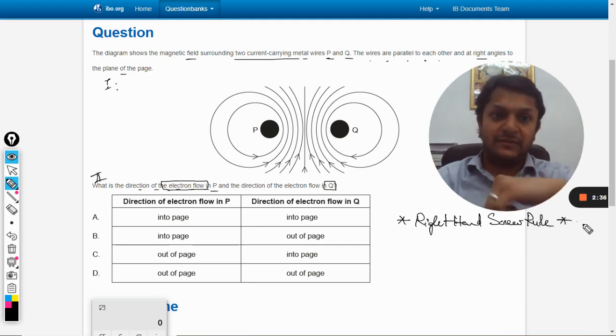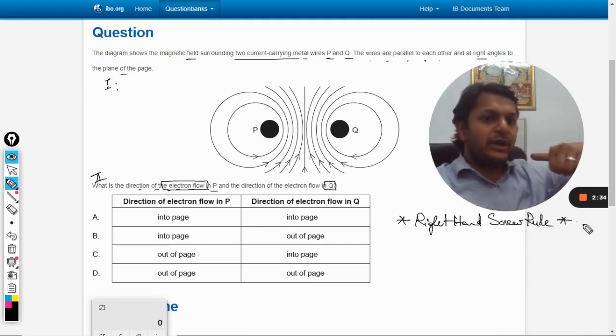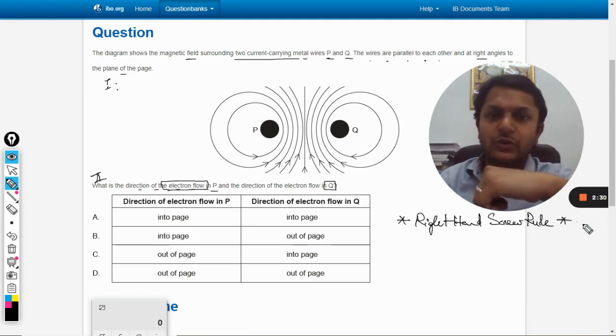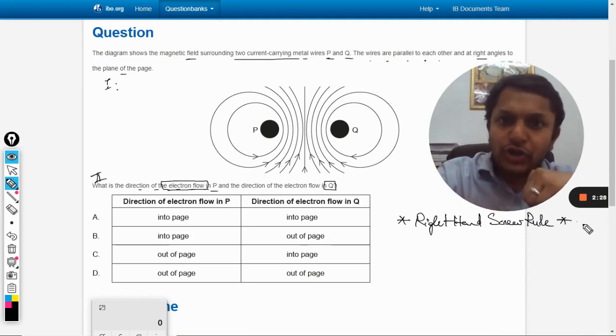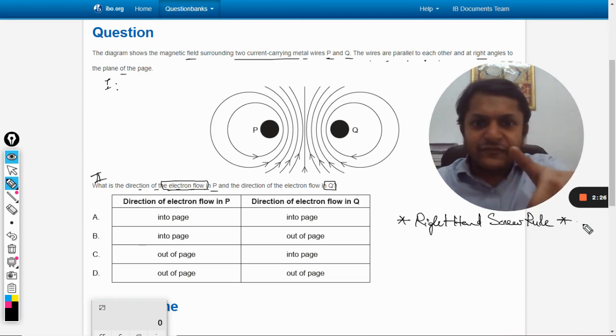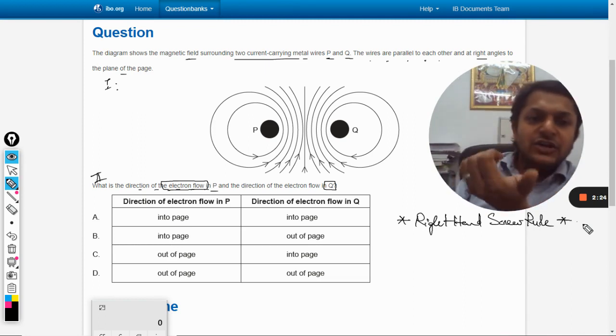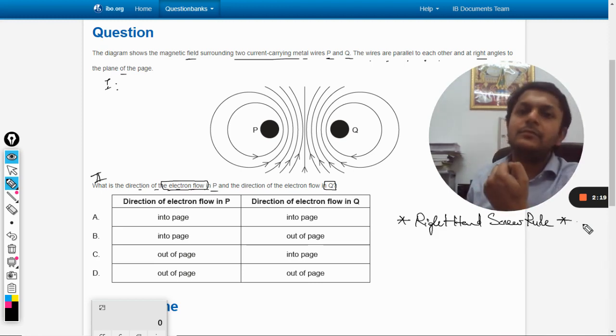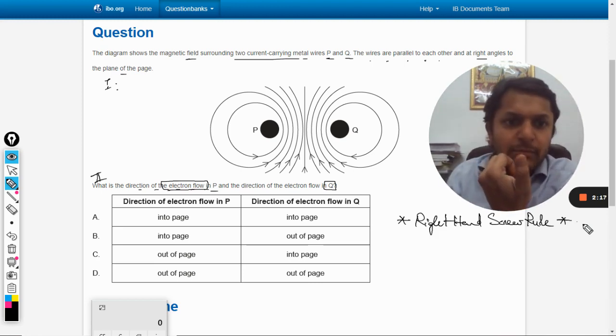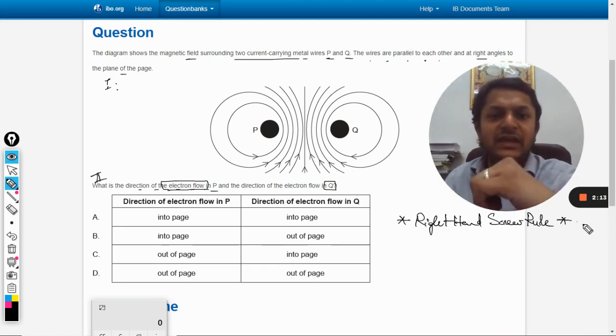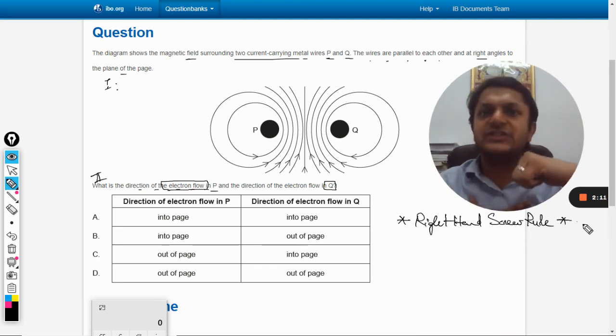So thumb is pointing towards me. You can see the thumb is pointing towards me. But when I talk about Q and I curl my finger according to the magnetic field, it will be like this and my thumb is pointing towards you. So for Q, the direction of the current is into the board, and for P the direction of the current is towards me.